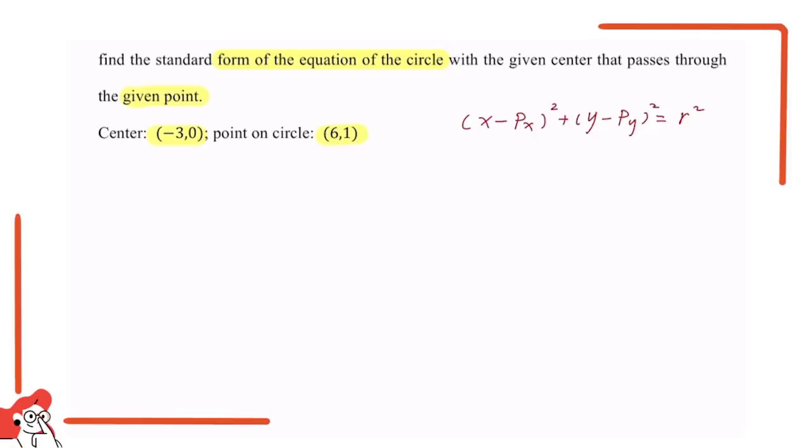So firstly we know the center is (-3, 0), so we can write the standard form of the equation of the circle, which is (x minus (-3)) squared plus (y minus 0) squared equals r squared.